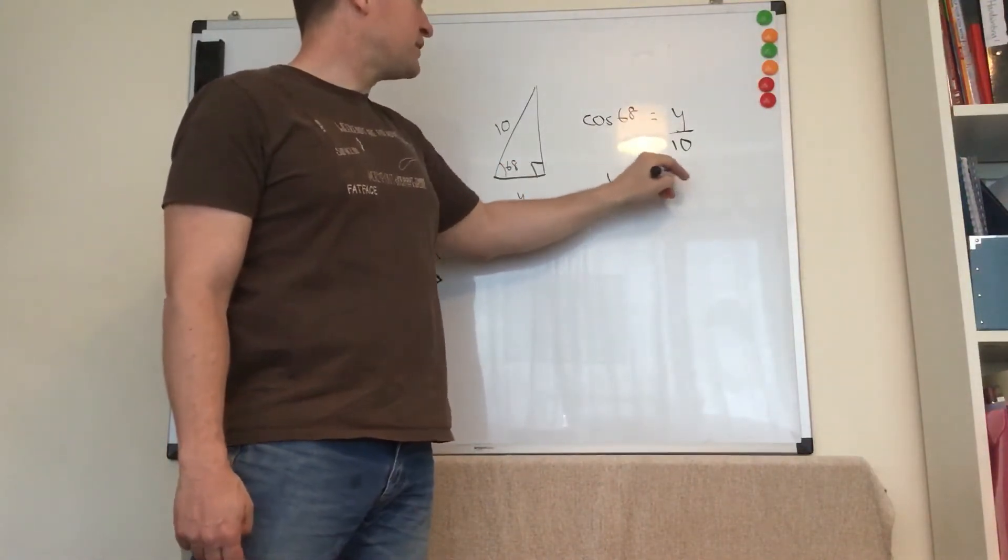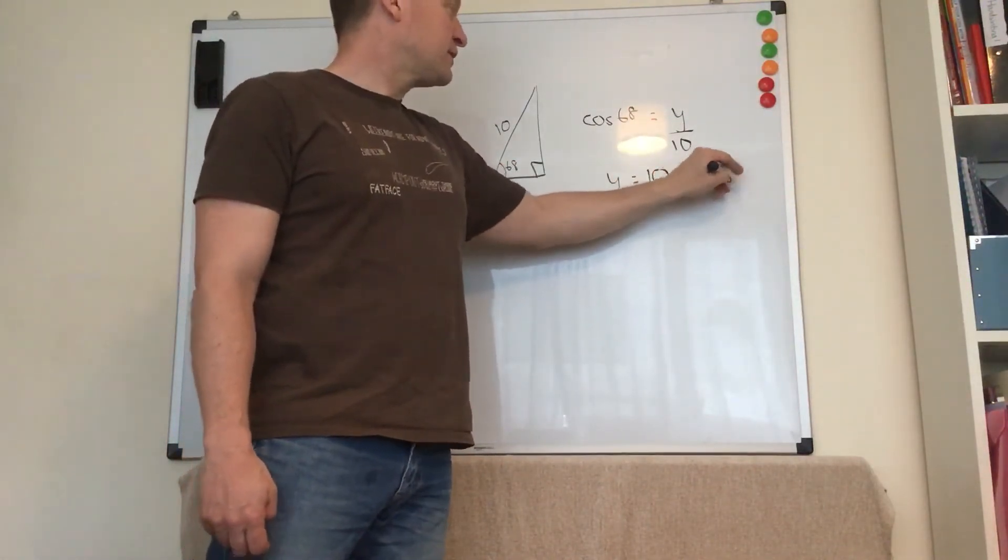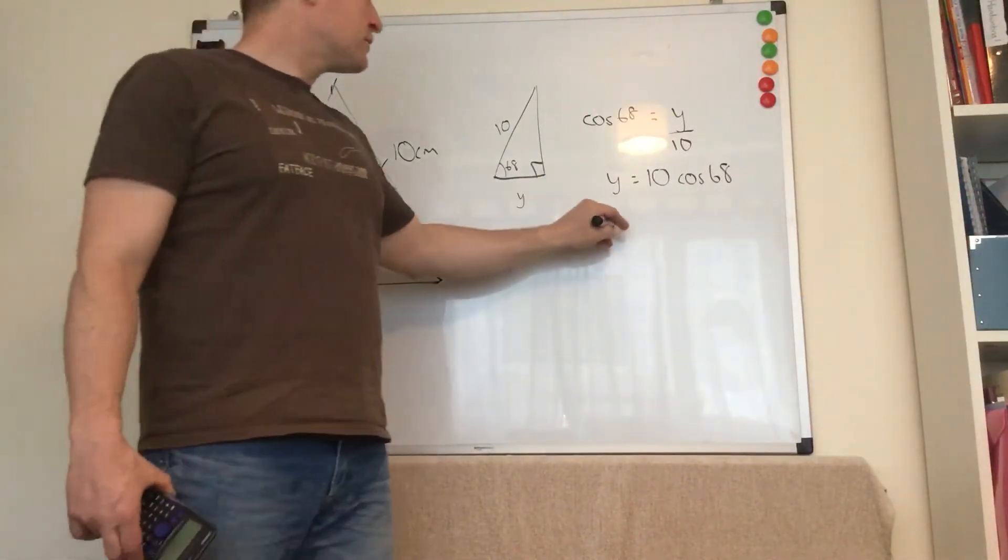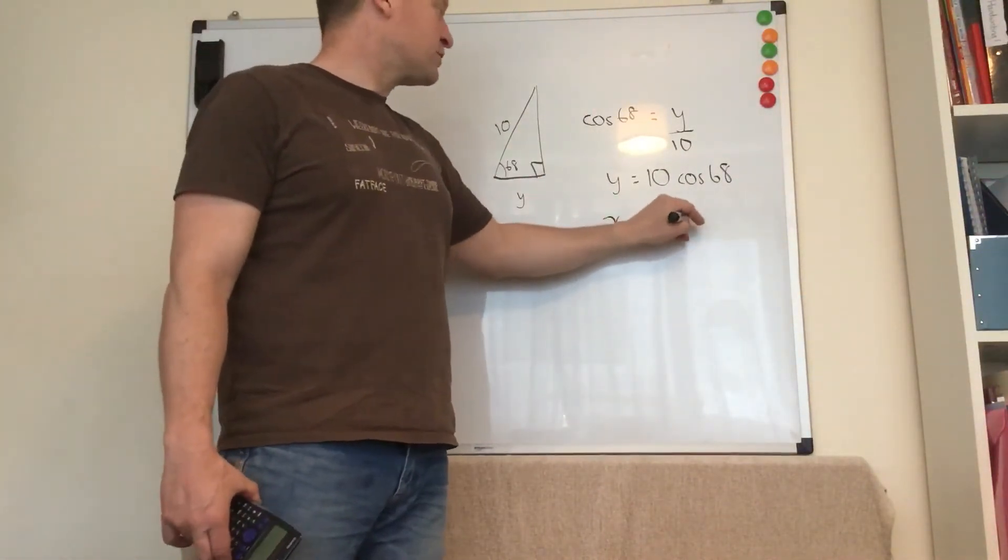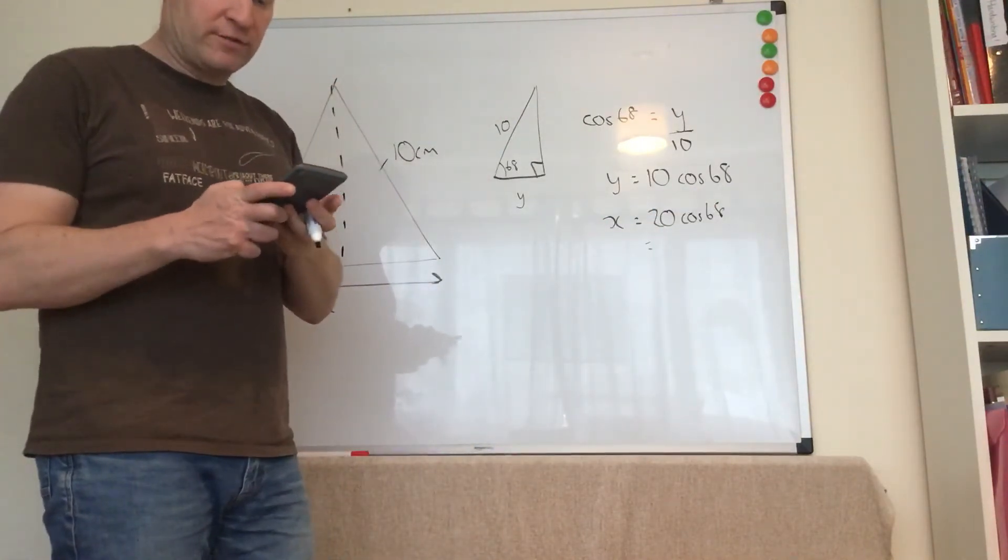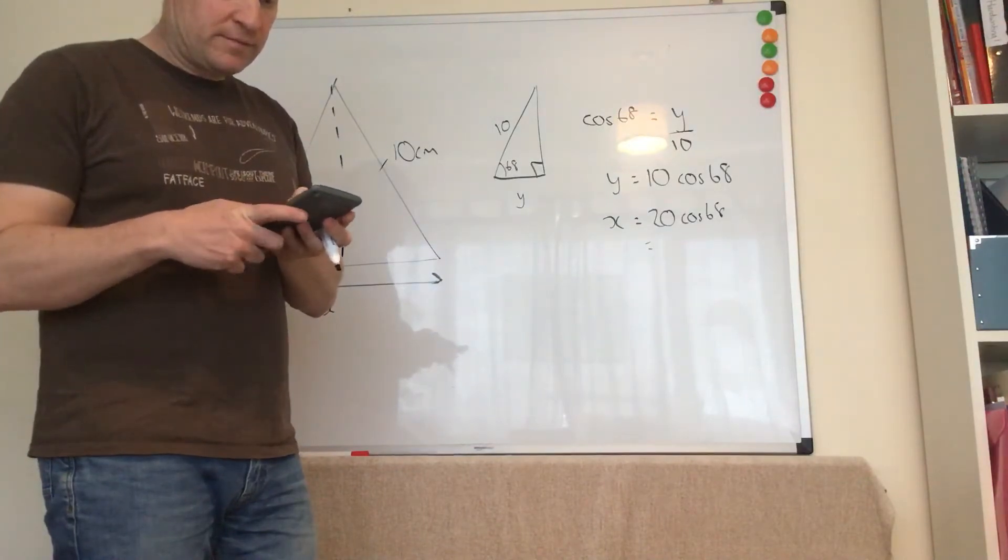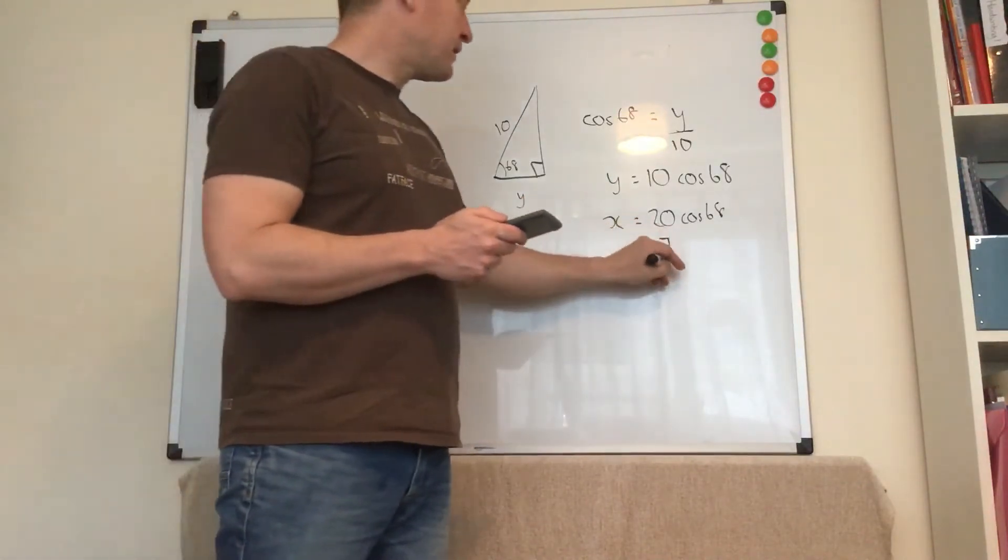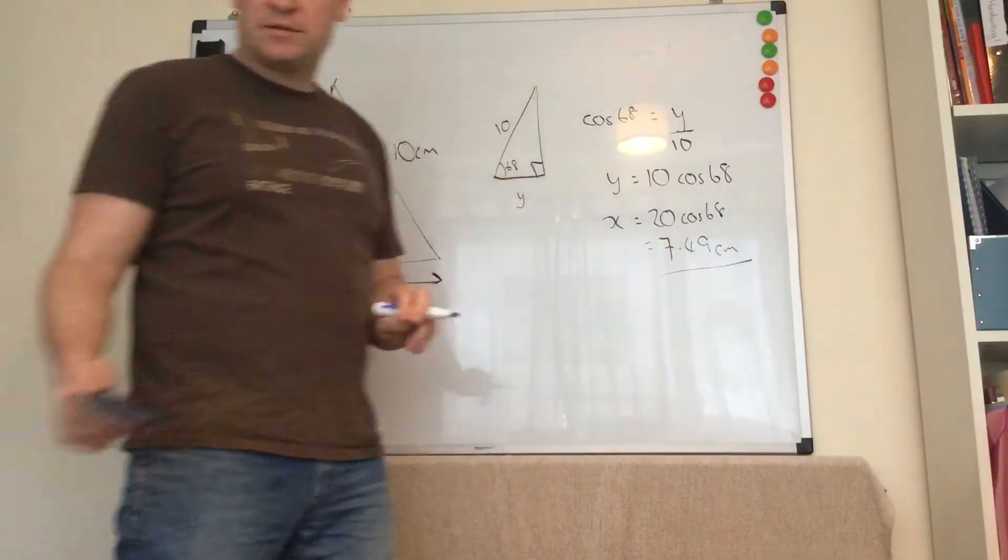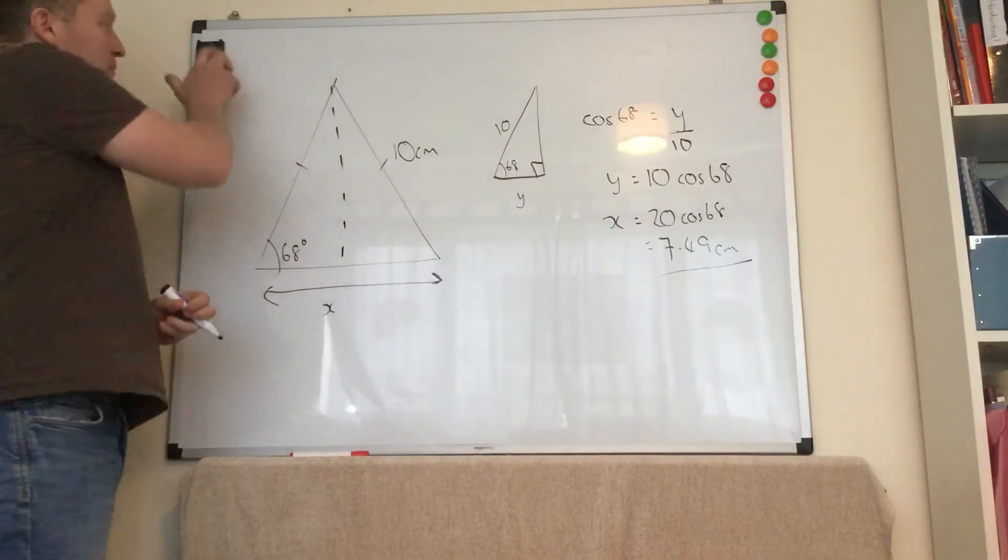So y equals 10 times cos 68. I'm going to type it into my calculator. It's sort of irrelevant because you'll have different numbers. I get 7.49 centimeters. Okay, moving on.